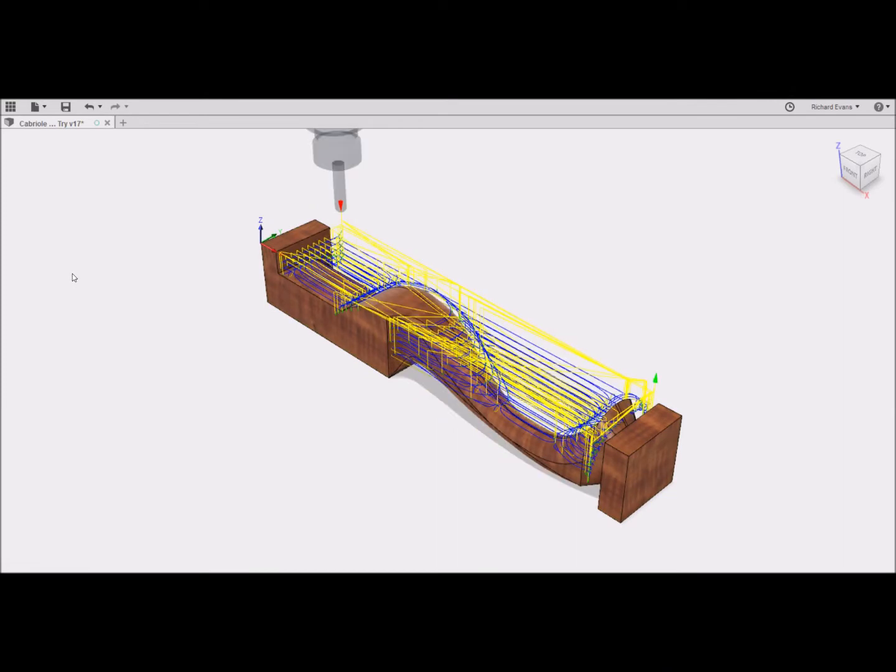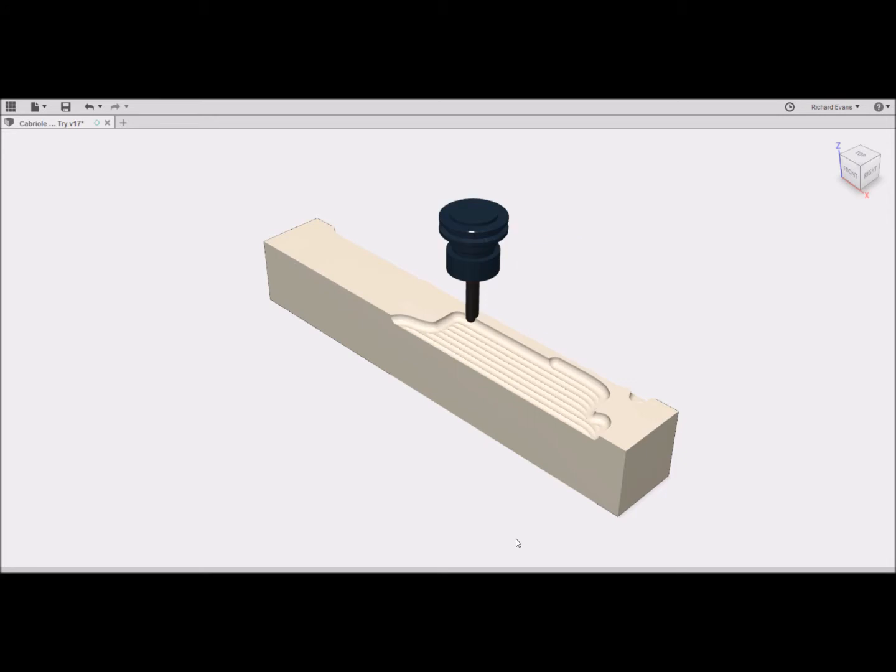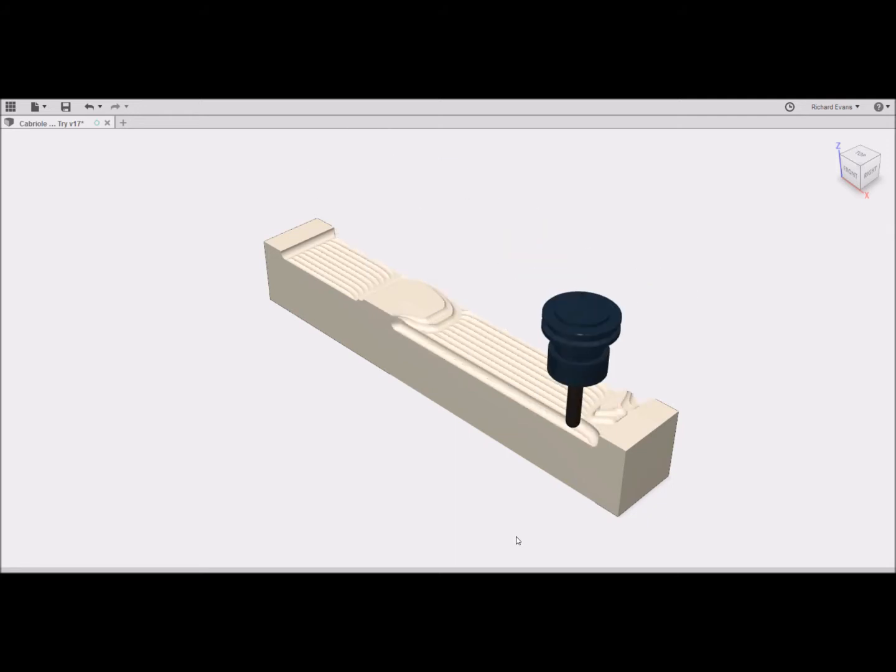Here we see the toolpath representation for one of the sides. The CAM software also allows the toolpaths to be simulated on the computer to confirm the program is cutting as intended. Here's a simulation of the first roughing cut on the top side. The leg will be milled in four different toolpaths, one for each side. The toolpaths are designed to be cut in a specific order. The faces are named top, bottom, back, and front based on the initial position of the stock. The toolpaths are run in that order: first top, second bottom, third back, fourth front, with the stock manually rotated between the running of each path.